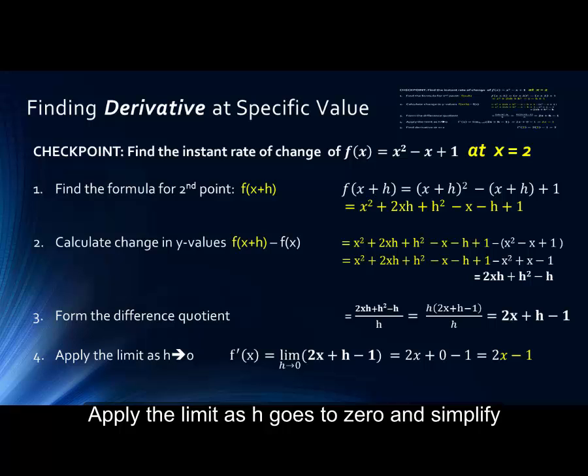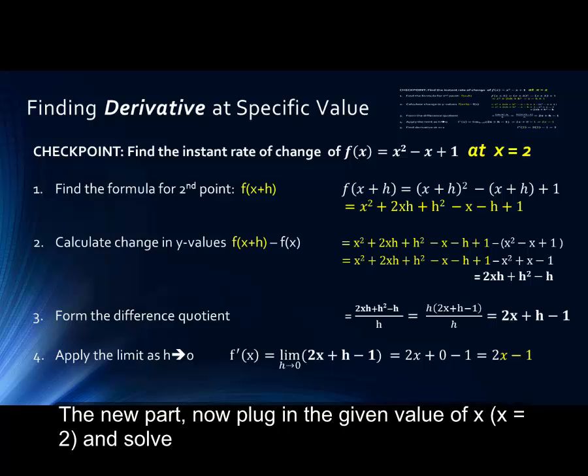Now, for this question, we're looking at a specific value when x equals 2. So that's the new part. We simply plug in x equals 2 into our final equation, and we get the instant rate of change at x equals 2, which in this case equals 3.